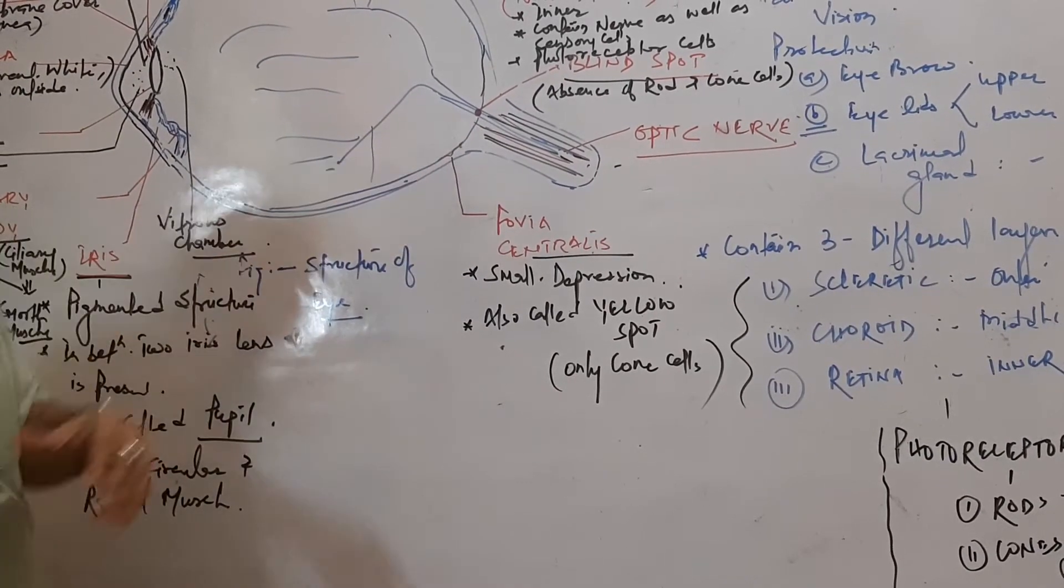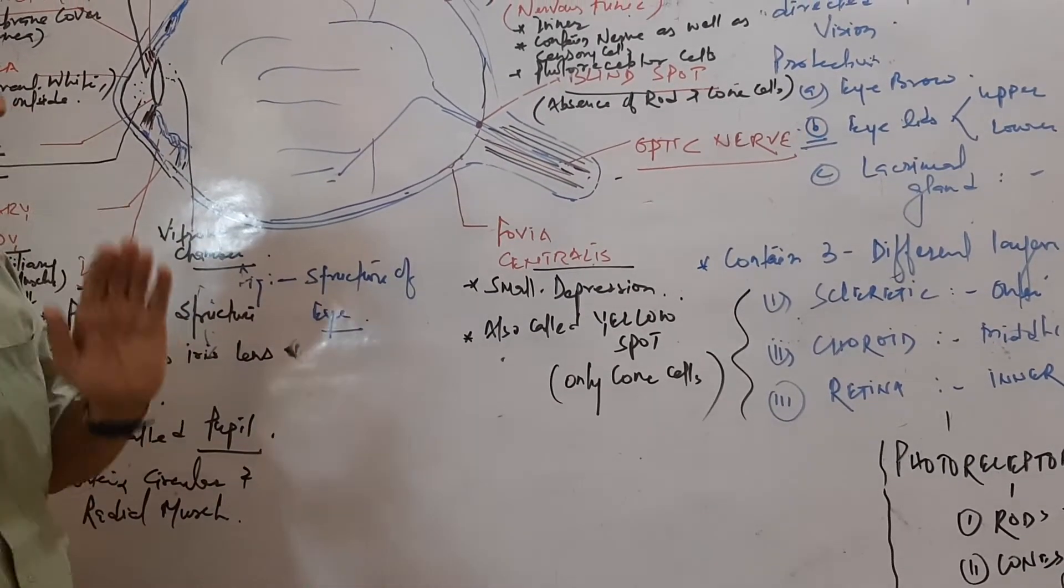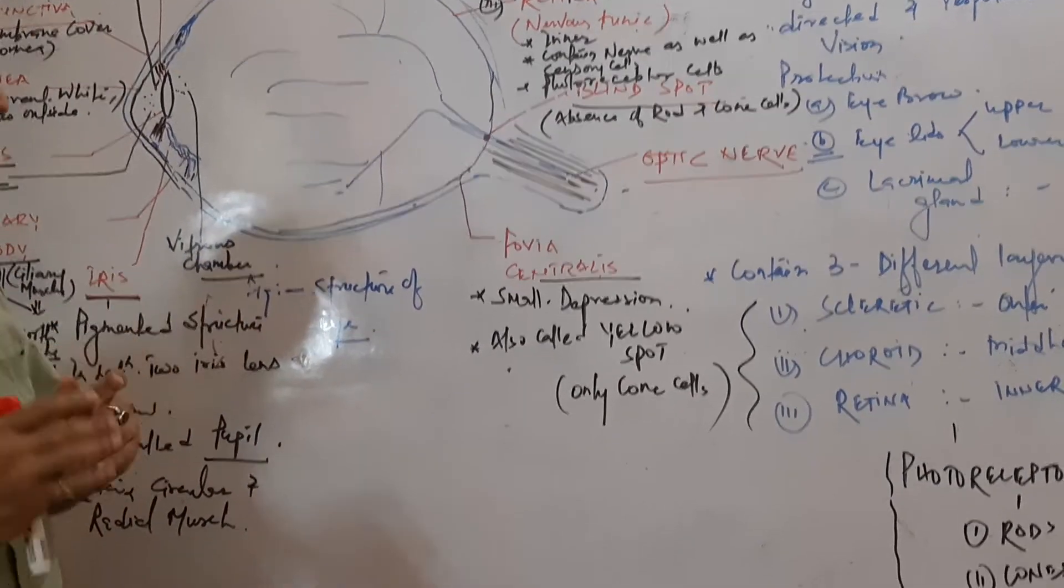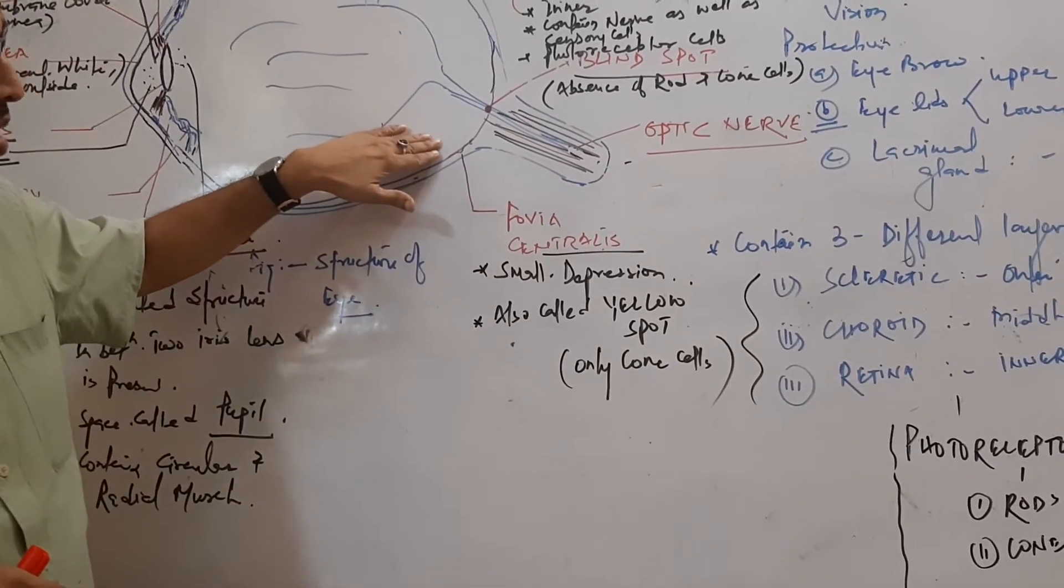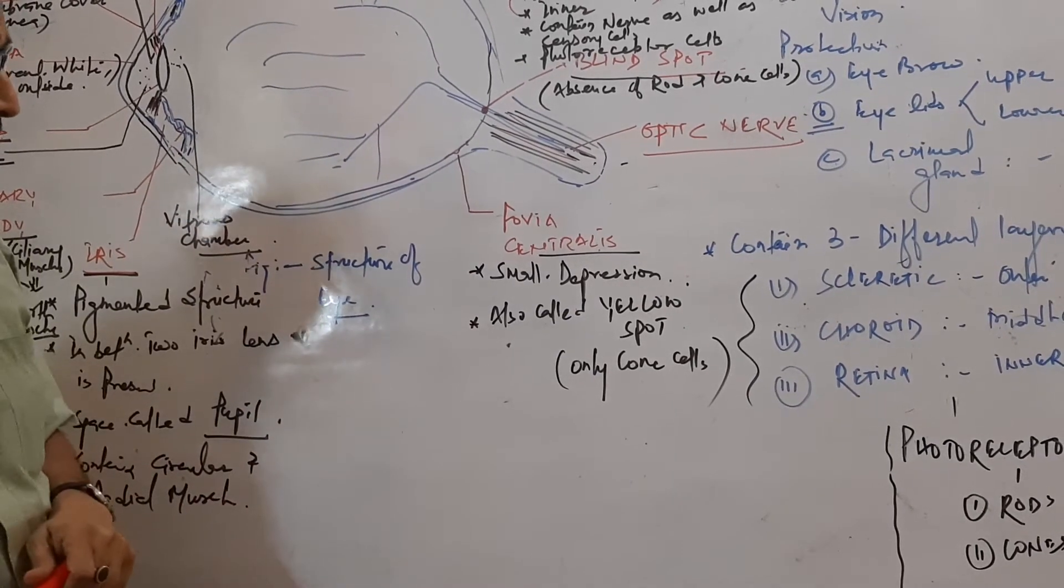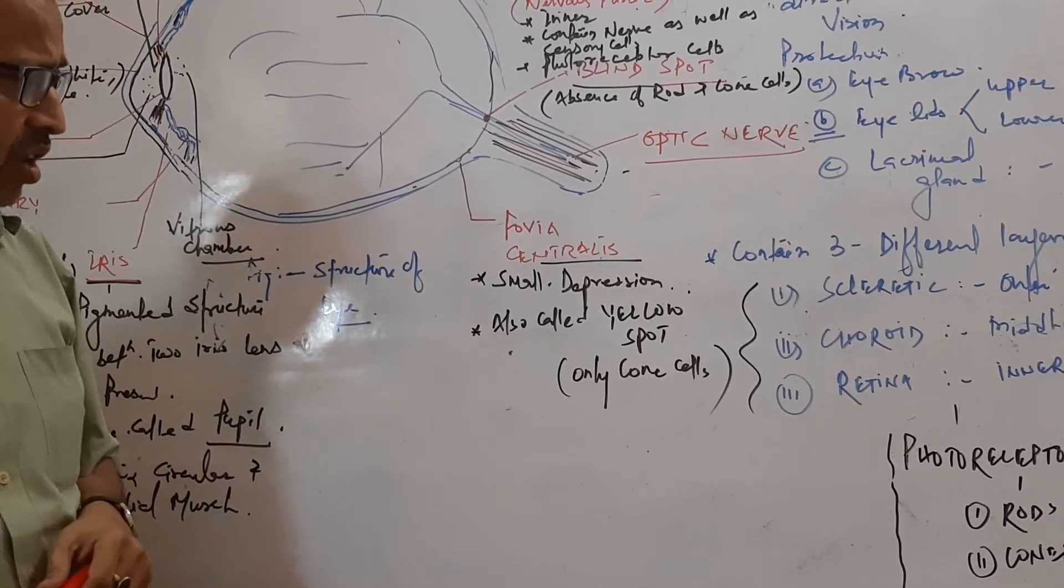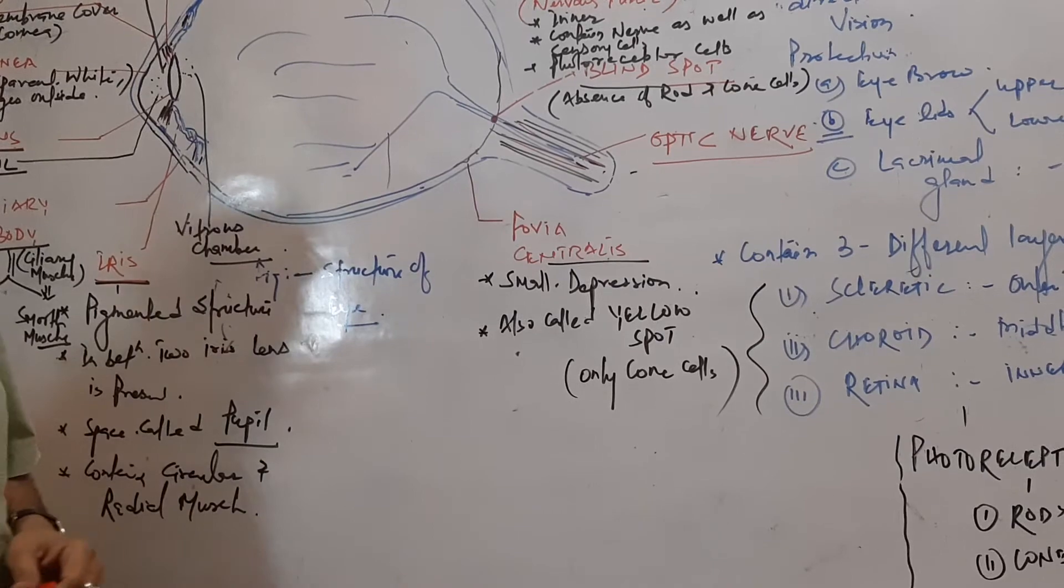A small depression present where the eyeball ends is called fovea centralis, also called yellow spot. This is where only cones are present.